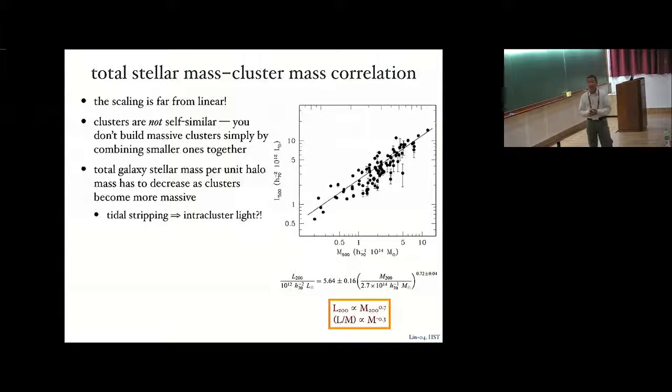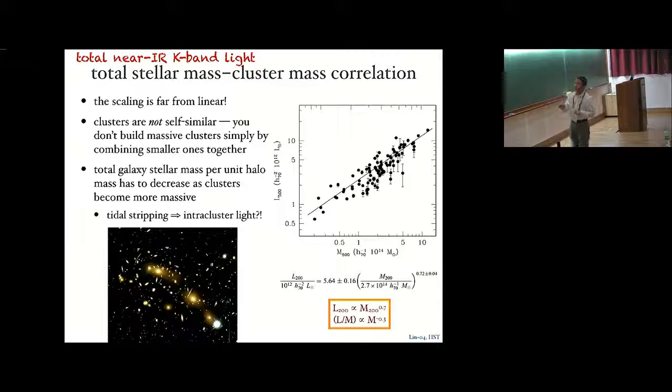Back in 2004, Professor Moore and I were among the first to show a tight correlation between the total near-infrared K-band luminosity and cluster mass. It seems the K-band light is a good proxy of stellar mass. This effectively is a correlation between the total stellar mass and cluster mass. We found that the total luminosity or stellar mass goes as cluster mass to 0.7 power. And this means that the clusters are not self-similar. Basically, you cannot build massive clusters simply by combining many lower mass ones together. If you divide both sides by mass, you see that the stellar mass per unit halo mass decreases with cluster mass. And what's the cause of this? Perhaps there is a lot of tidal stripping that converts an initially linear relation into a sublinear one and liberates a lot of stars into the intracluster space.